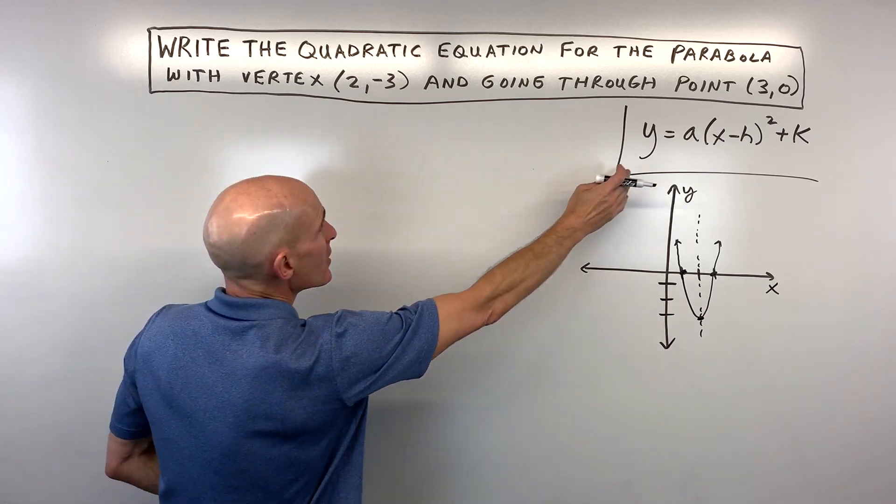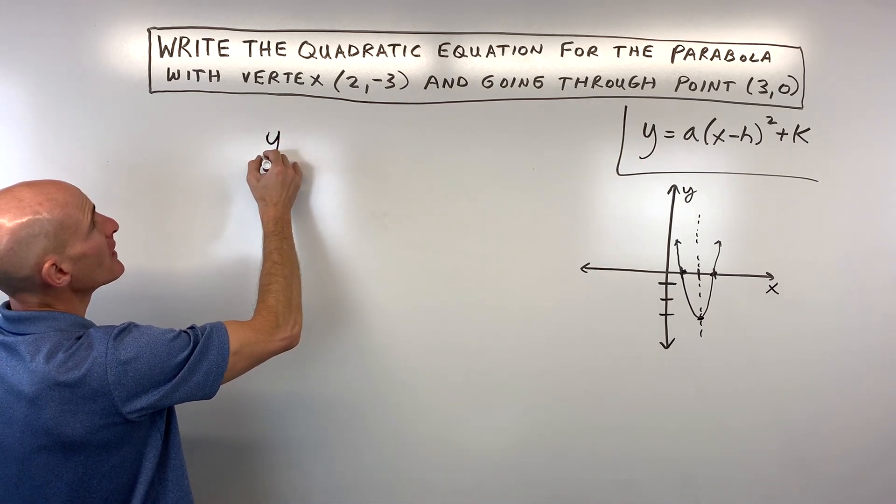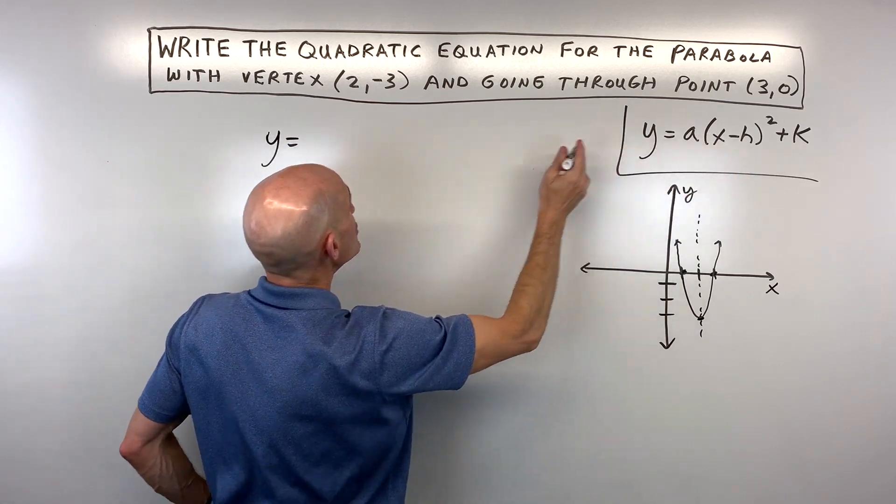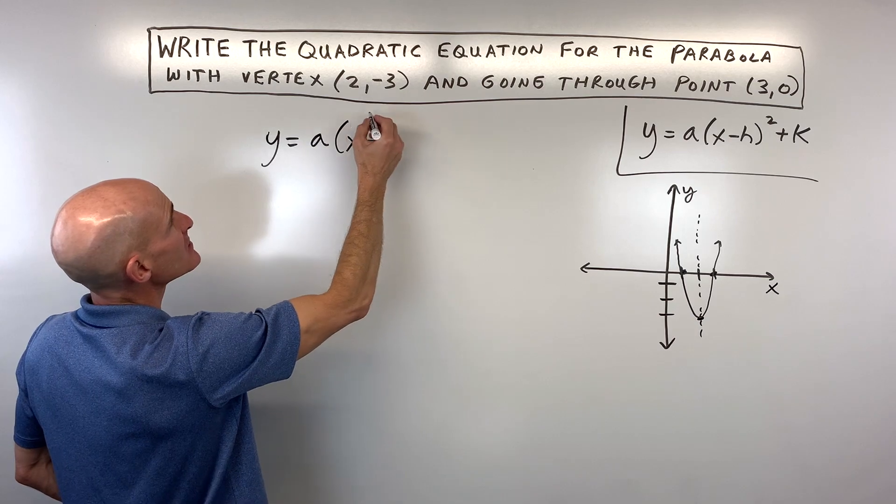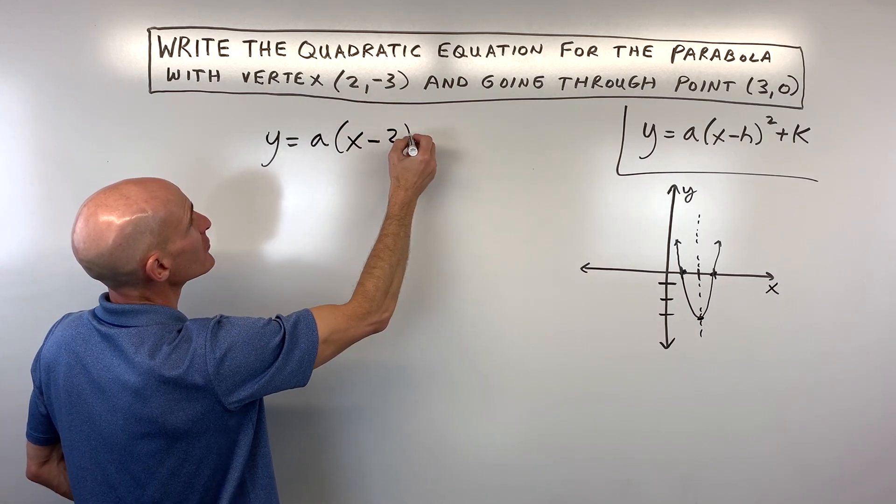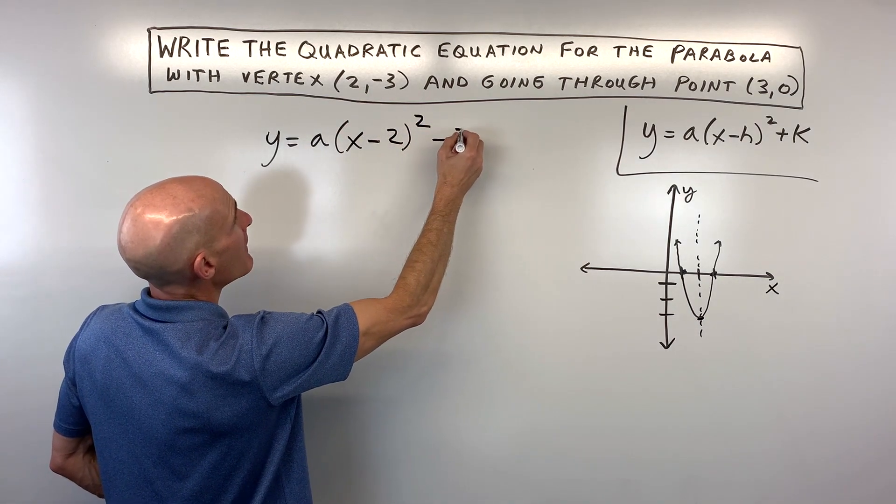So what I'm going to do is start with this general form, the vertex form, and plug in our vertex, h and k. So it's going to look something like this: y equals a times (x minus 2), the x-coordinate of the vertex, squared, minus 3.